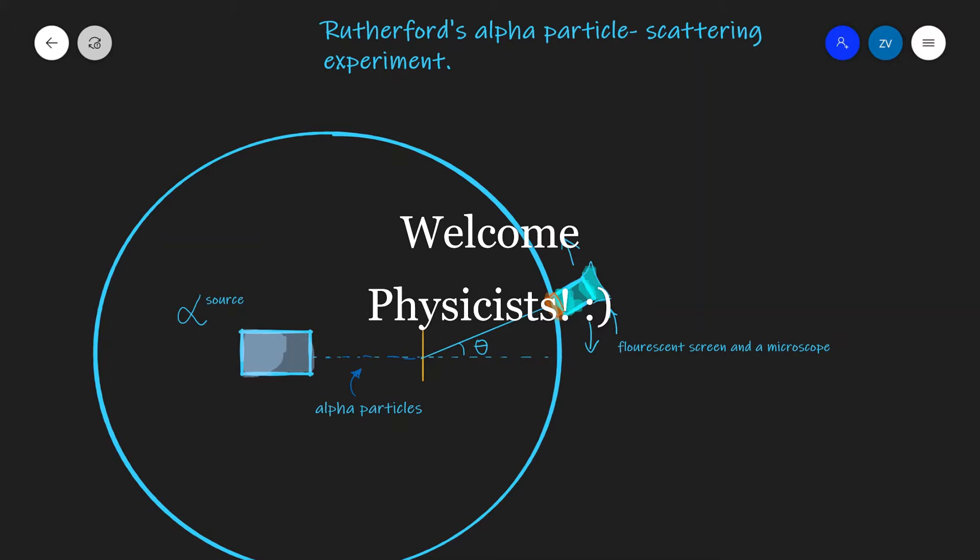Today we are going to be talking about one of the most important experiments in the history of particle and nuclear physics, namely Rutherford's alpha particle scattering experiment.